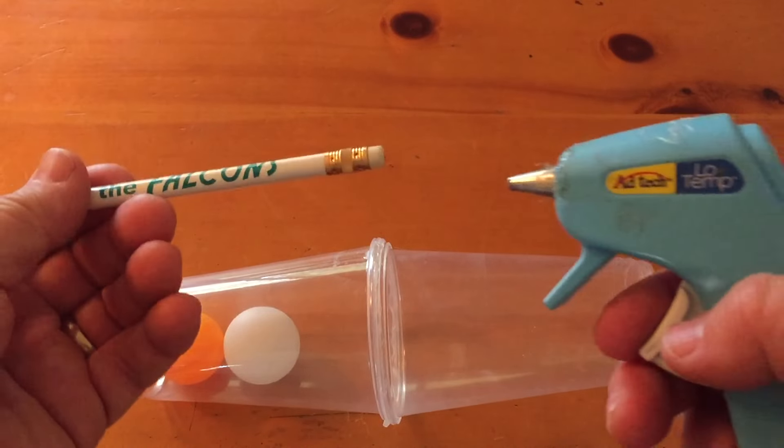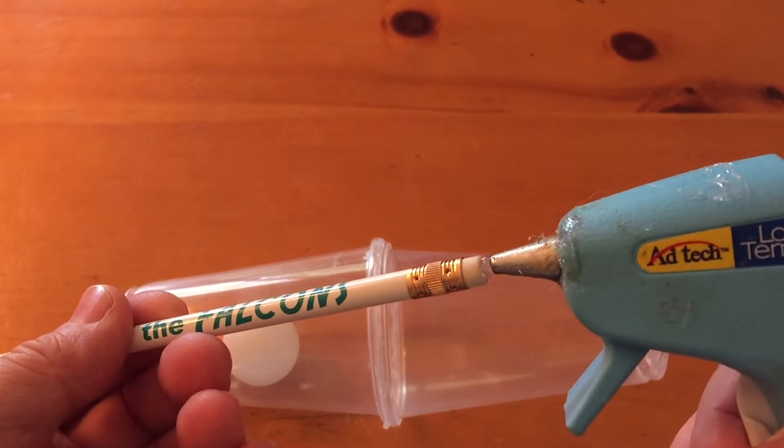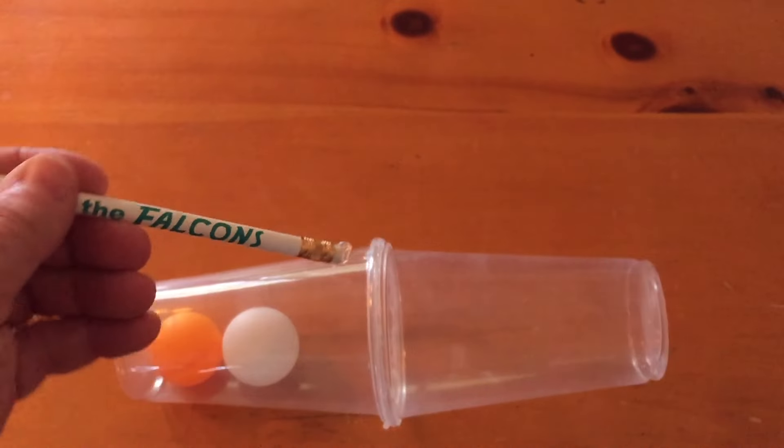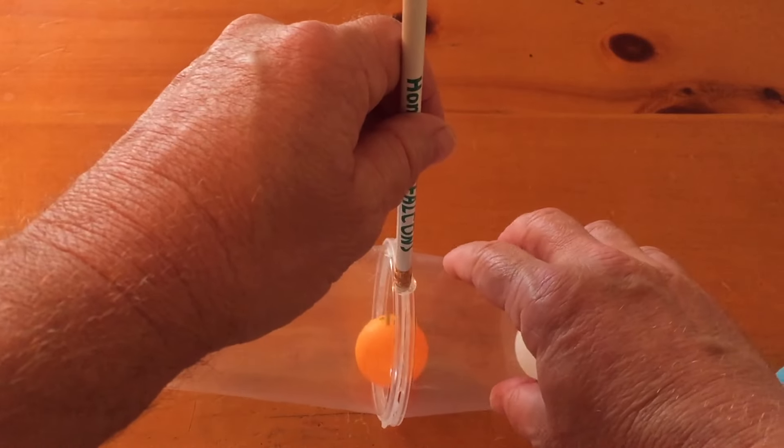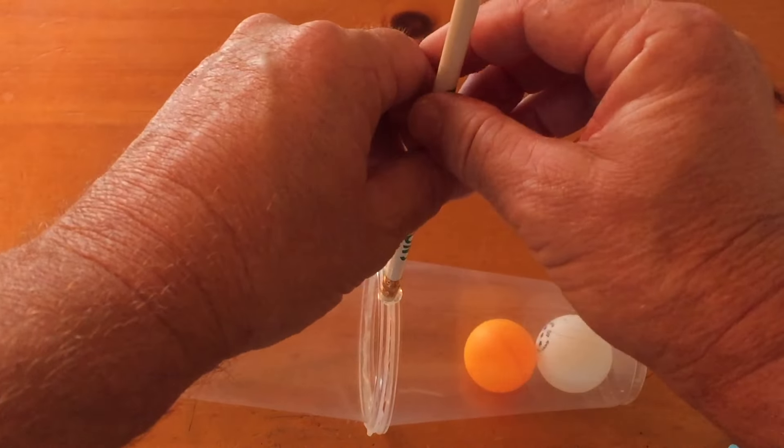So put a little bit of hot glue on the eraser end. Put a whole bunch on because you want this to really stay on. I'm going to probably have to add a little bit more than that. Then hold it down until it dries, just takes a little bit and then you're ready to go.